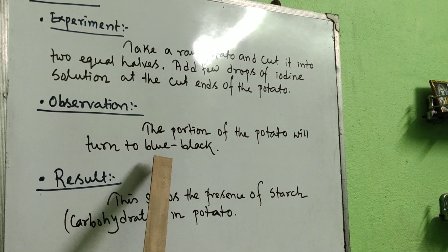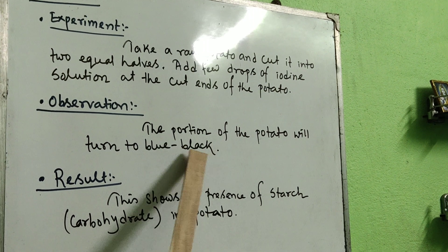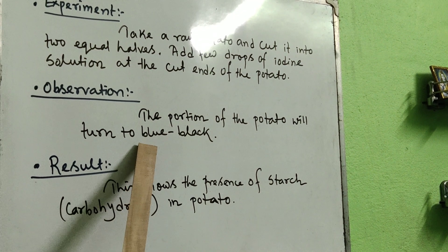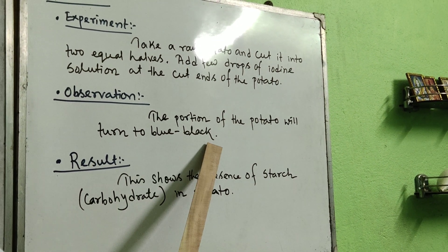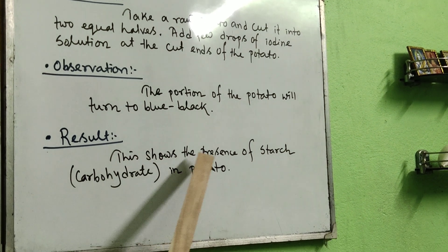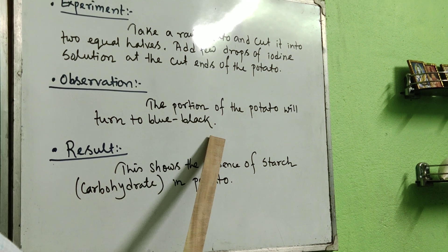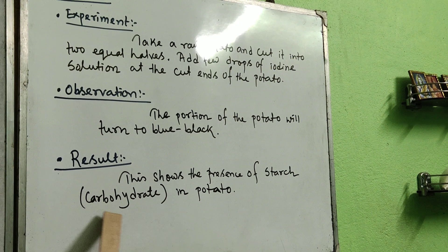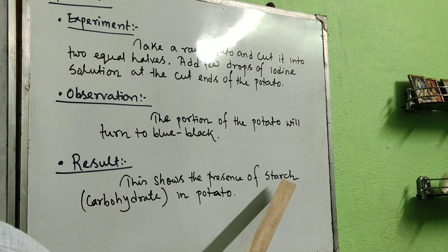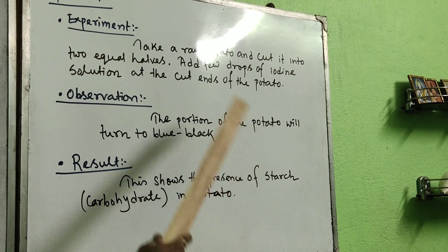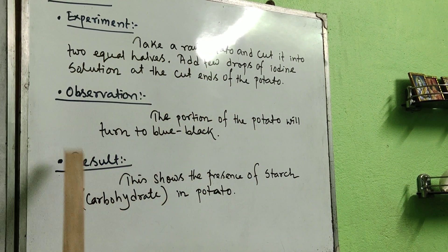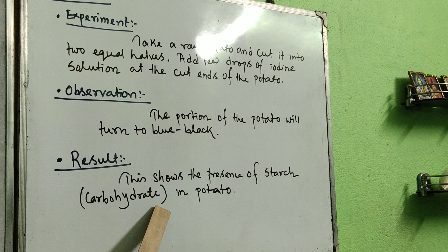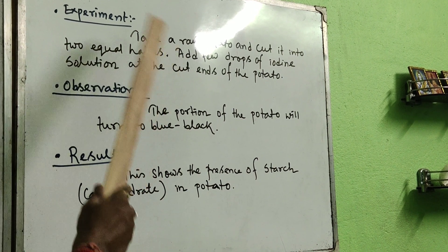The observation is that the portion of the potato where you added the iodine solution will turn blue-black. If that particular portion turns blue-black, this shows the presence of starch in the potato, which is a carbohydrate. You can also see another video on my channel for a more detailed conclusion on this experiment.